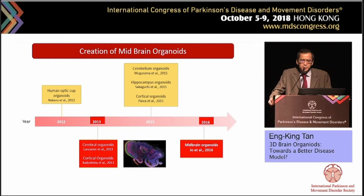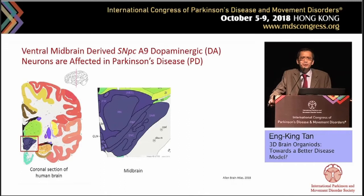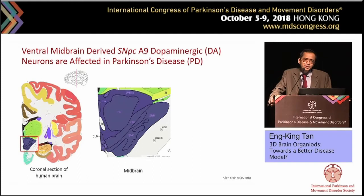Since that discovery, our group was the first to develop the mid-brain organoid. Let me tell you the story behind this. When I first looked at Lancaster's picture, as a biased movement disorder neurologist, the first thing I was looking for was the mid-brain. I was very disappointed because I couldn't find it — it was missing. So I called my good friend Huck, who works in cancer stem cell biology, and said, 'I think can you partner me in this? I'm very interested to generate the mid-brain.' And the first thing he told me was: 'What is the mid-brain?'